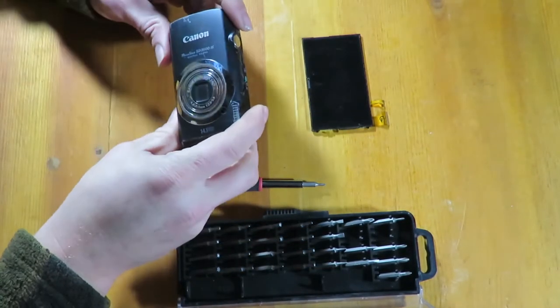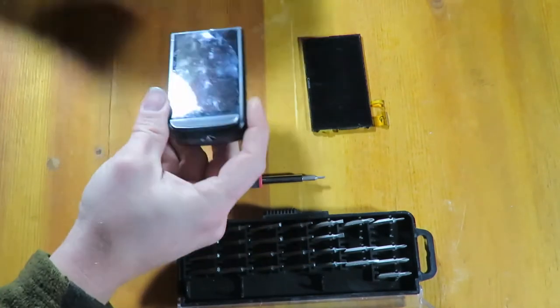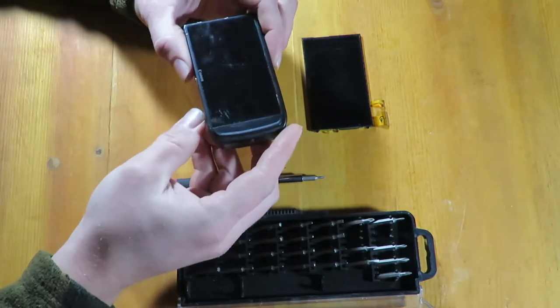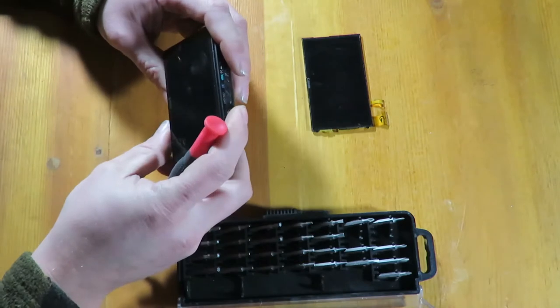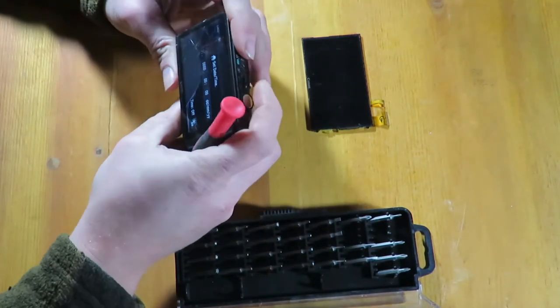Okay, today we have a Canon PowerShot SD 3500IS Digital Elf. Notice I took the lanyard strap off. Other than that, I haven't really done anything to prep this camera. The problem we are taking care of today is a damaged LCD.